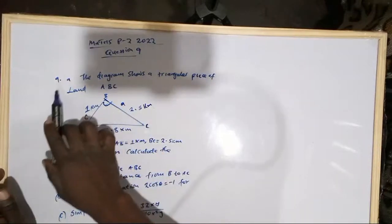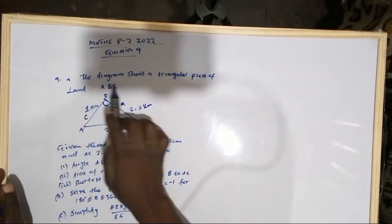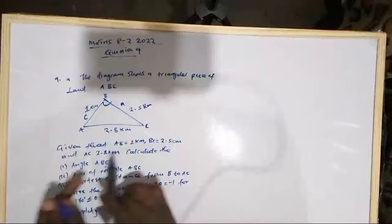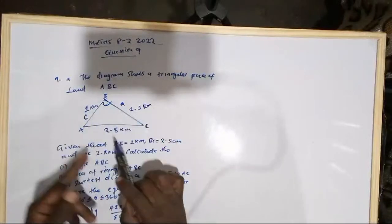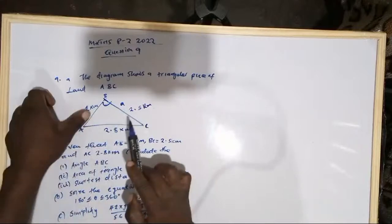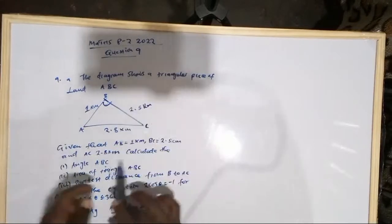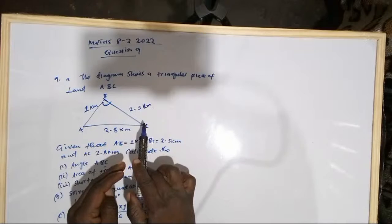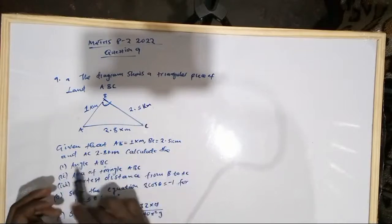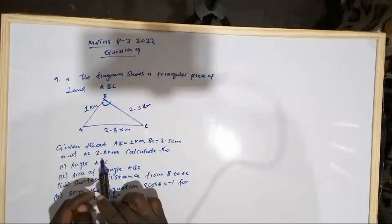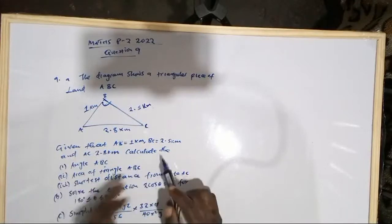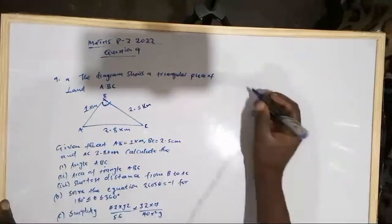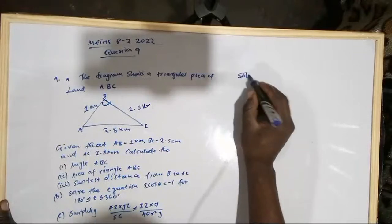From this, we are told the diagram shows a rectangular piece of land. We are given that AB is 1 kilometer, BC is 2.5 kilometers, and AC is 2.8 kilometers. We are then told to calculate the angle ABC.